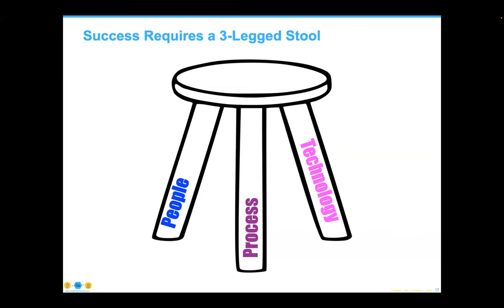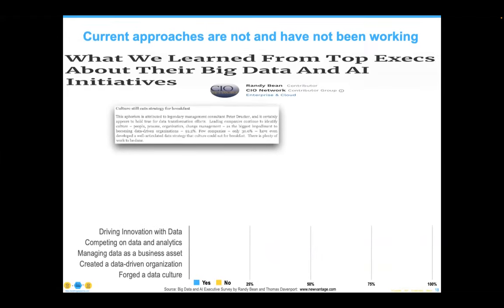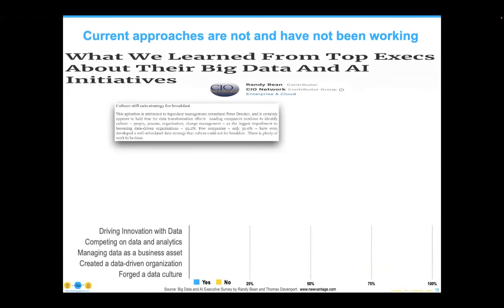Success in this area is a truly three-legged stool. If the airlines decided to put me on a two-legged stool, I wouldn't have a very good experience on that particular flight. Equal amounts — and in fact larger amounts — of people and process than technology, but all three have to be present. Most organizations simply rely on technology.